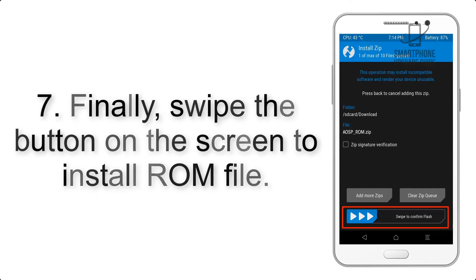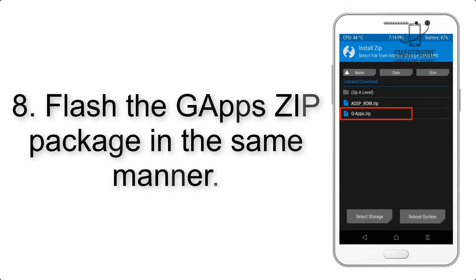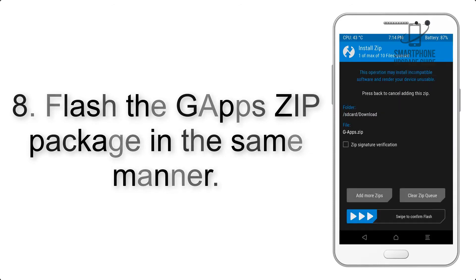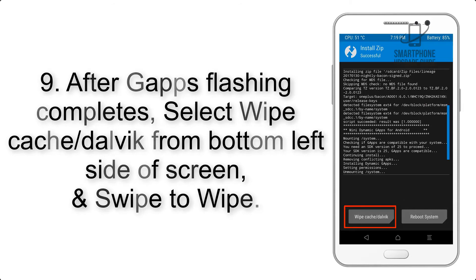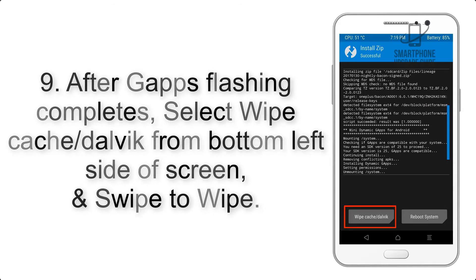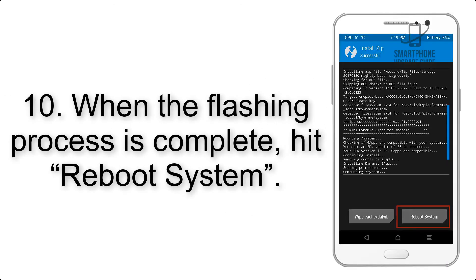Step 7: Finally, swipe the button on the screen to install the ROM file. Step 8: Flash the GApps zip package in the same manner. Step 9: After GApps flashing completes, select Wipe Cache and Dalvik from the bottom left side of the screen and swipe to wipe.